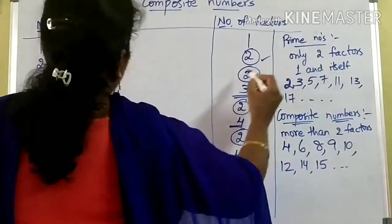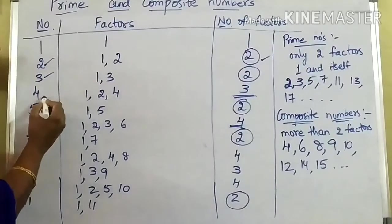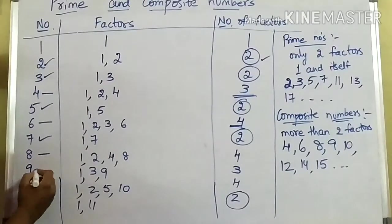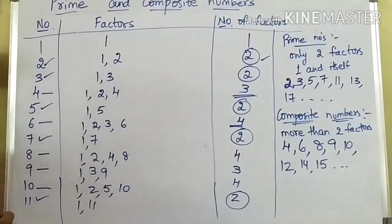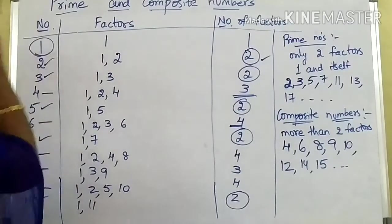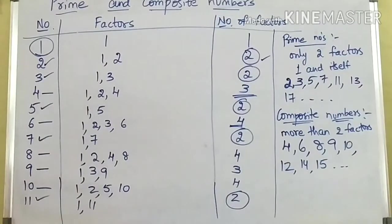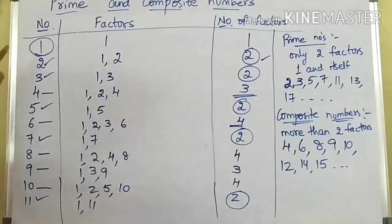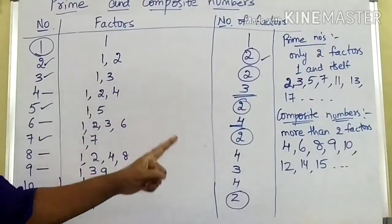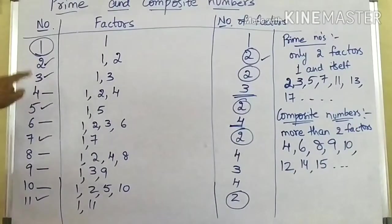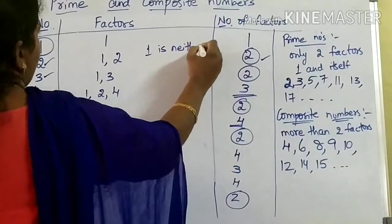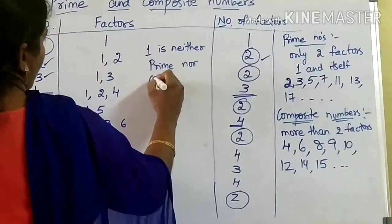If you observe: two is a prime number, three is a prime number, four is a composite number, five is a prime number, six is a composite number, seven is a prime number, eight is a composite number, nine is a composite number, ten is a composite number, eleven is a prime number. From two onwards we classified into prime numbers and composite numbers. Then what about one? One is having only one factor. Prime numbers should have two factors and composite numbers should have more than two factors, but one is having only one factor — that is why one is called neither prime nor composite number.